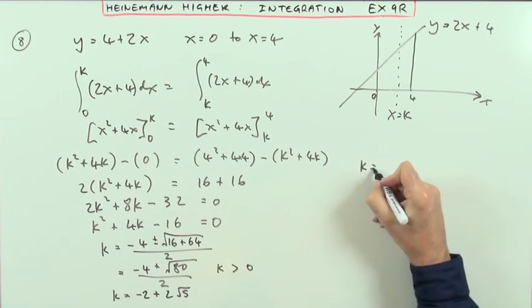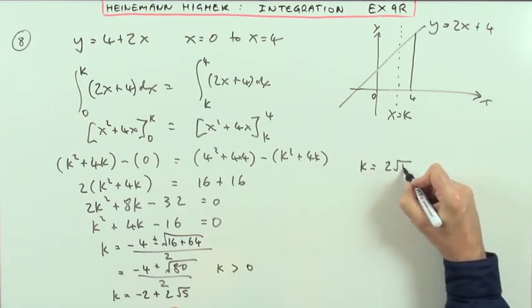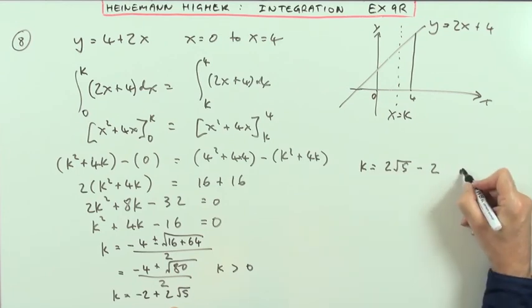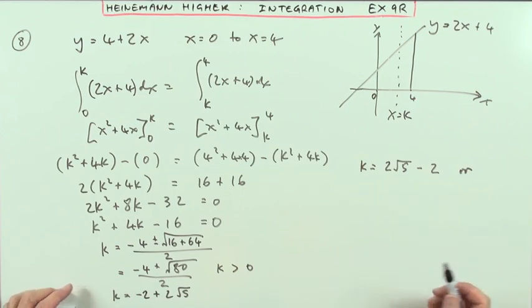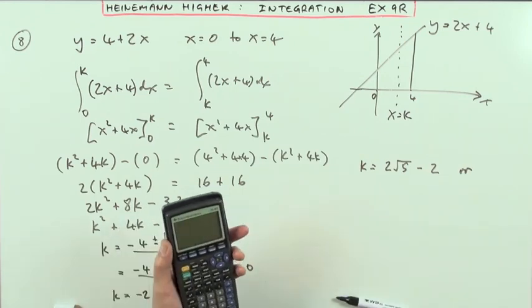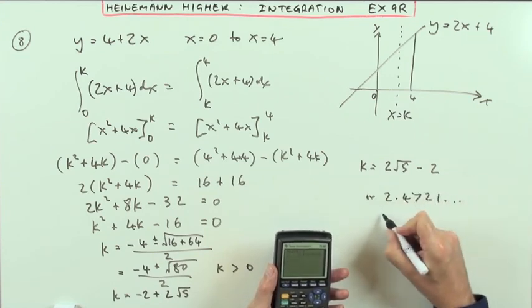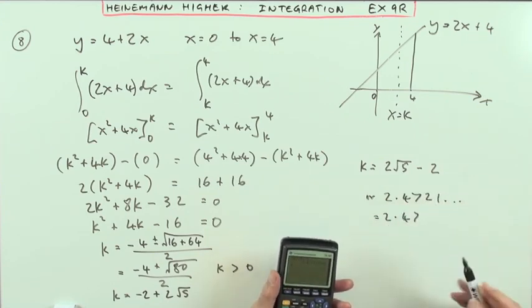So I could put that in, put it down either way. k equals, maybe I'll put 2 root 5 minus 2. Or as a decimal, just put that into your calculator. I'll put it down here: 2.4721 and so on, which is 2.47.